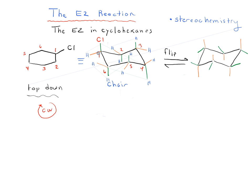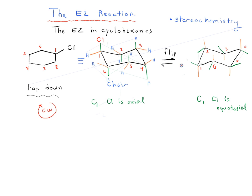The key thing here is that on C1 the chlorine was axial in the first chair form. In the chair-flipped form, the chlorine is now equatorial. We need to renumber C1 in the flipped chair to keep the clockwise ordering. So now our chlorine has become equatorial.